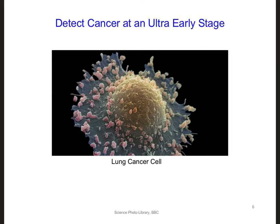It turns out that cancer doesn't start from just one abnormal rogue cell. Cancer starts when an entire organ, which is at risk of cancer, becomes somewhat abnormal. For example, a person doesn't get lung cancer from just a single cancer cell in the lung.